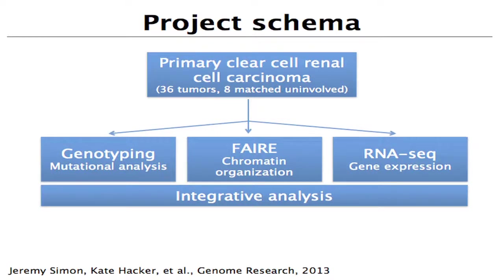We essentially genotyped for about 250 mutations in 36 tumors and 8 matched uninvolved tissue, as well as performing FAIRE. FAIRE is a simple chemical method for identifying nucleosome-deficient regions of chromatin — essentially all the regions that are promoters, enhancers, and early replication origins. It's an unbiased way of filtering the genome. We also performed RNA-seq for all these samples and then performed an integrative analysis. This work was primarily performed by Jeremy Simon and Kate Hacker, and the paper just came out yesterday in Genome Research.